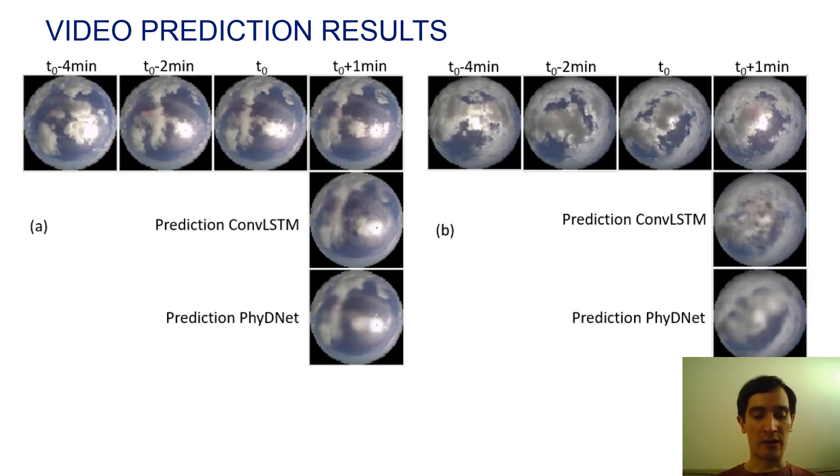And here, we can also see that the PhyDNet Dual model predicts much sharper images than the baseline ConvLSTM.